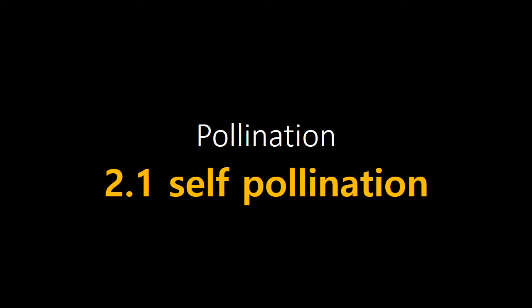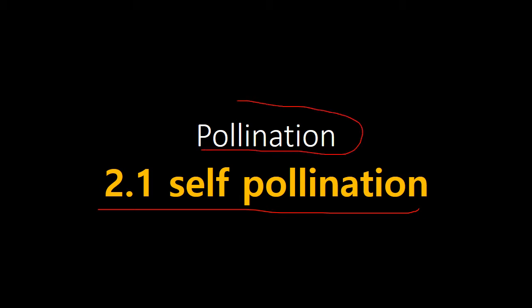Hey guys, I hope you are enjoying this new series on plant breeding. We've been seeing various topics under plant breeding techniques — we have seen self-incompatibility, mutation, mass selection, and pure line selection. So right now the next topic is pollination. Today the topic is going to be about self-pollination.